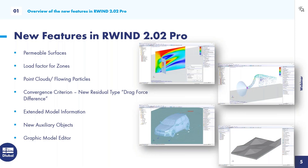There are also new auxiliary objects — you can add comments or dimensions to your model. And last but not least, there is the graphic model editor, which allows you to model directly in RWIND. You don't need CAD software, and you can also use RWIND alongside RFEM6. This allows you to create models and terrain with thickness vectors, so you can directly study the effect of terrain on wind flow.